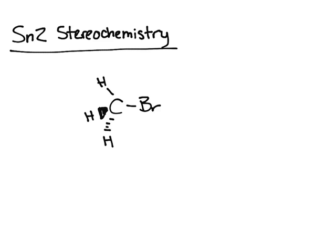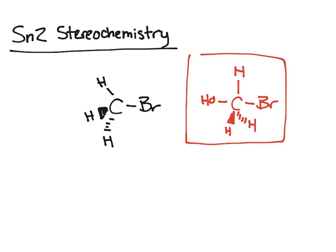Let me just draw that out. What I've drawn in red is the transition state, known as TS. And for our nucleophile, we're going to use OH-, so this is our nucleophile.